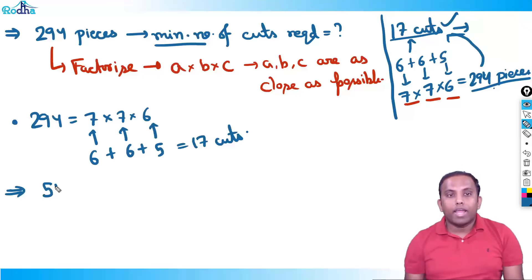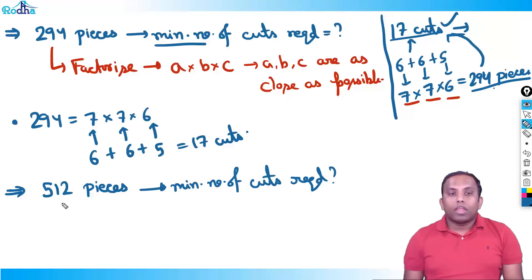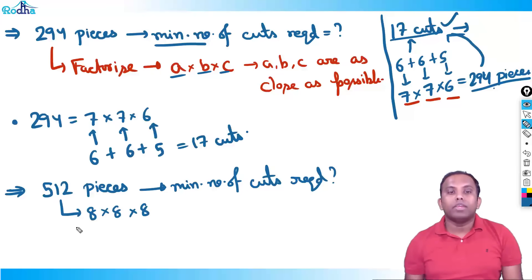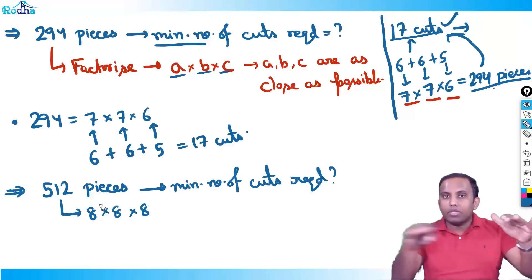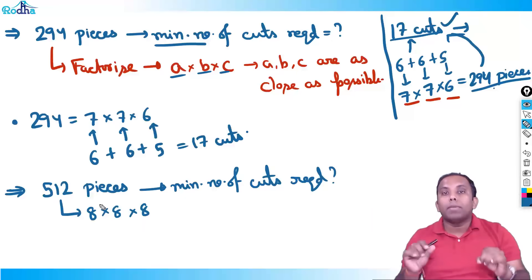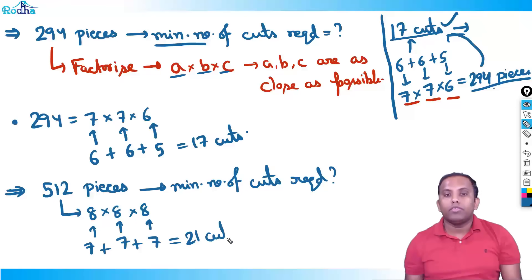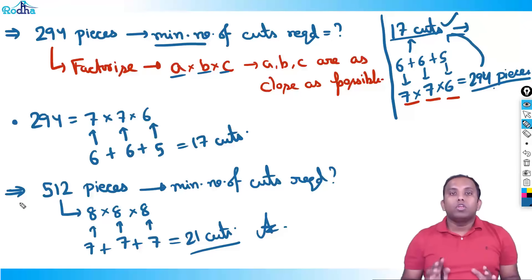For 512 pieces: factorize as A × B × C as close as possible. 512 = 8³ = 8 × 8 × 8. So 8 pieces in each dimension means 7 cuts in each dimension. Total minimum cuts = 7 + 7 + 7 = 21 cuts. Minimum 21 cuts are required to make 512 pieces.